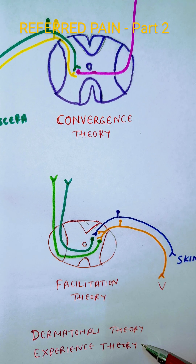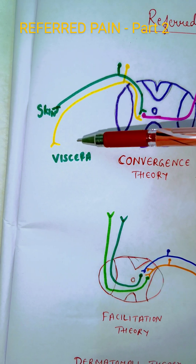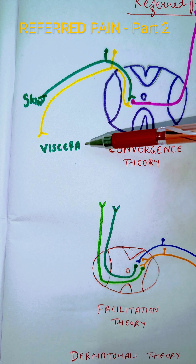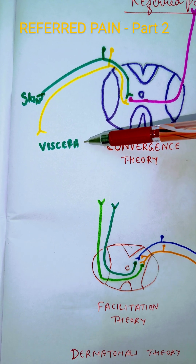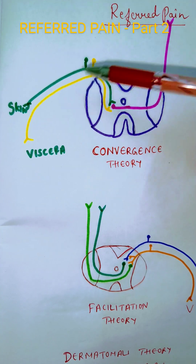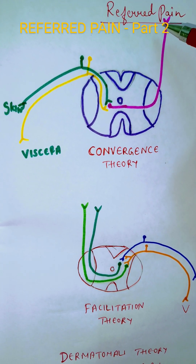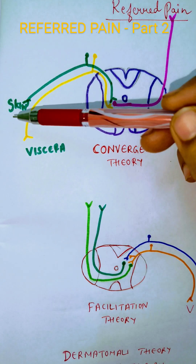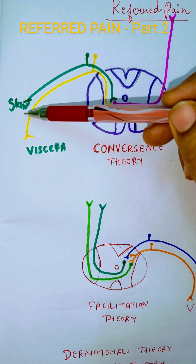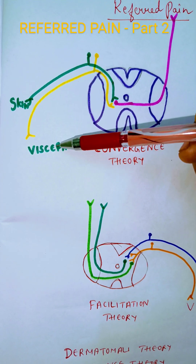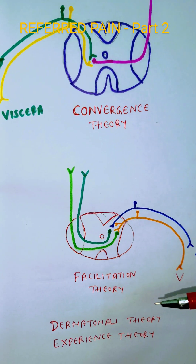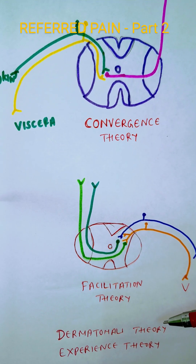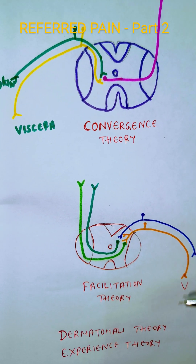Another theory is the dermatomal theory. The experience theory has already been described — normally the most common site of injury is the skin compared to the viscera, so the brain always initially thinks the pain is coming from the skin.